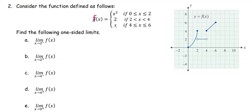For this problem, we are going to use the graph of the function f of x as the piecewise defined function. f of x is defined as x squared for x greater than or equal to 0 and less than or equal to 2, which is the piece over here. The second piece is defined as f of x equals 2 if x is strictly greater than 2 and strictly less than 4, which is the middle one. And the last one, f of x is defined as x if x is greater than or equal to 4 and less than or equal to 6, which is the straight line segment on the right side with slope 1.